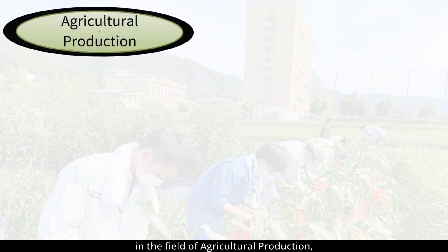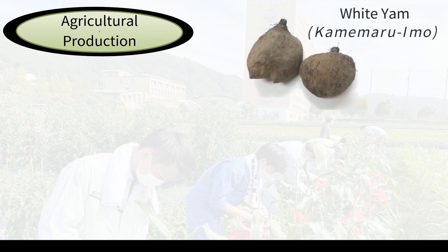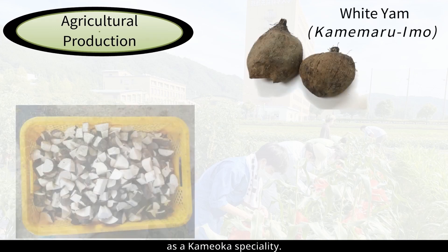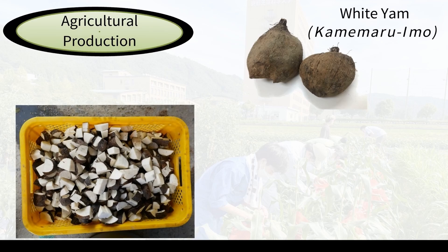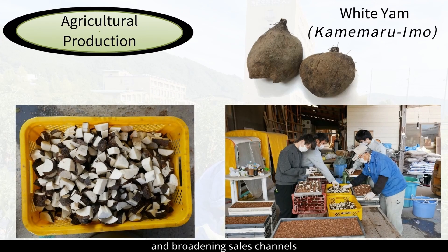Moreover, in the field of agricultural production, we have developed locally-adapted Kamamaru-imo white yams from tropical roots as a Kamioka speciality. Our ongoing efforts include enhancing its variety, expanding production, and broadening sales channels in collaboration with local farmers.